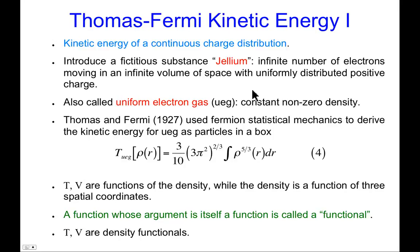Well, that's the potential energy. That's not so hard to write down, but what about the kinetic energy? How do you get the kinetic energy of a continuous charge distribution? That is not obvious. We don't really have particles moving around. We've just got this distribution. So Thomas and Fermi in the late 1920s approached this by defining a fictitious substance. We'll call it jellium.